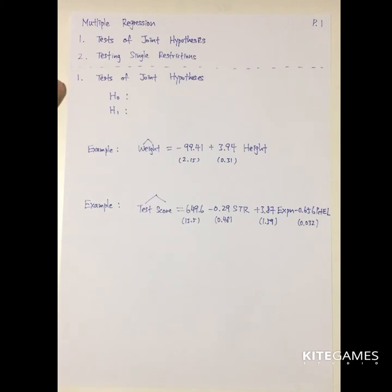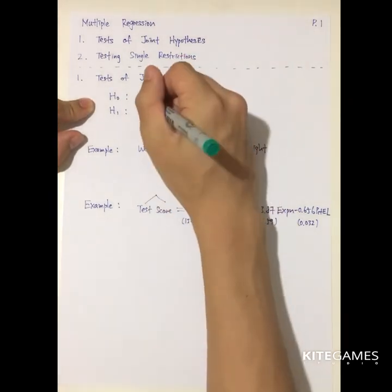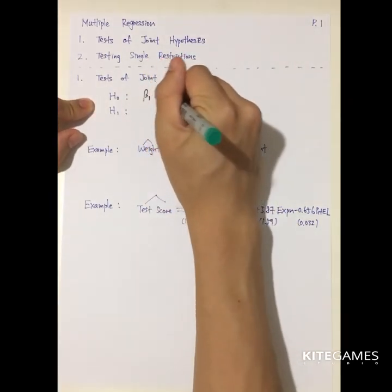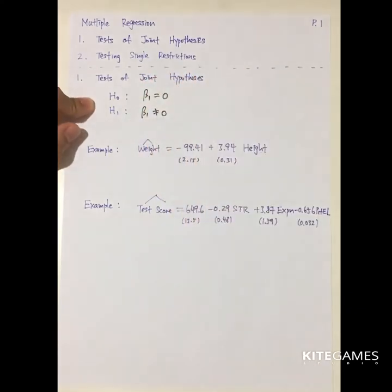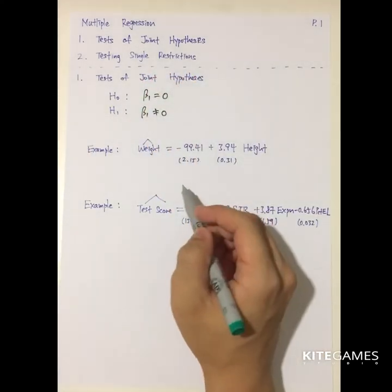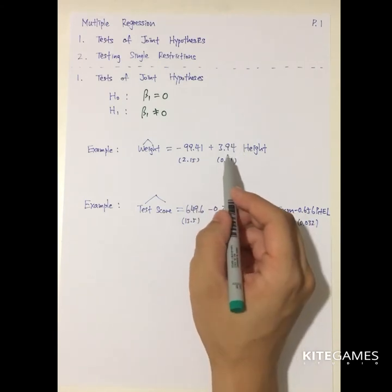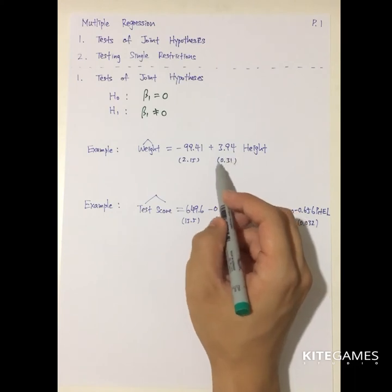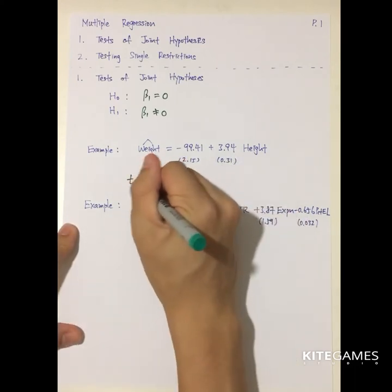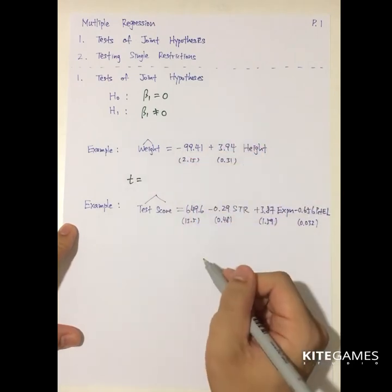Let's get started. The first thing we need to do is to test the joint hypothesis. In the single variable regression case, we set up a null hypothesis saying that beta1 is equal to zero, and the alternative is beta1 not equal to zero. After that, we go to the sample and look for the data — we look for beta1-hat and its standard error — so we can do a t-test, p-value, or confidence interval.